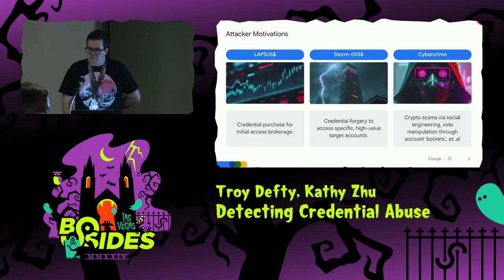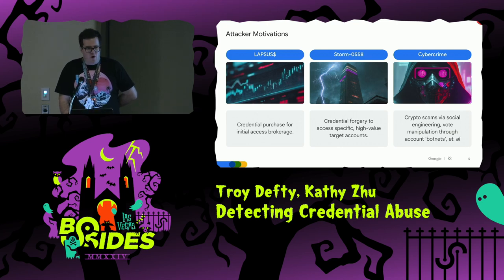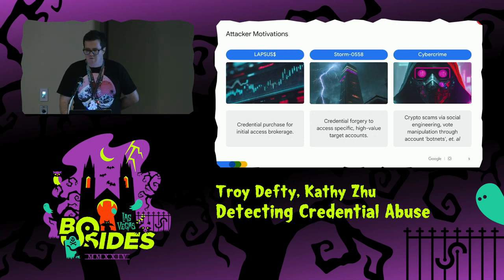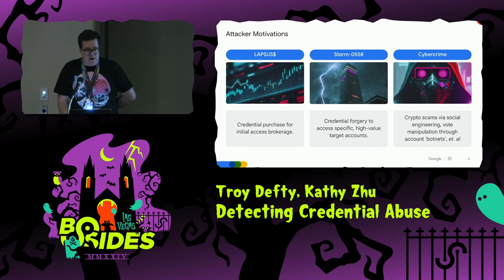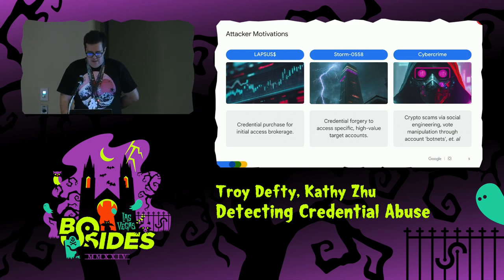When we talk about credential compromise, we need to remember that it really means account compromise. And account compromise can be used for many things, including spam or abuse campaigns, ransomware scams, social engineering, or in more sophisticated instances, initial foothold in target organizations — lateral movement, privilege escalation, all these kinds of really bad things. For an attacker, this is a highly sought-after set of accesses. Some of you might remember Lapsus, the group that used to purchase credentials as a form of initial access, amongst other things.